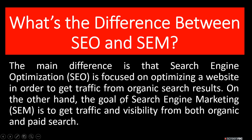What is the difference between SEO and SEM? The main difference is that search engine optimization is focused on optimizing a website in order to get traffic from organic search results. On the other hand, the goal of search engine marketing is to get traffic and visibility from both organic and paid search.